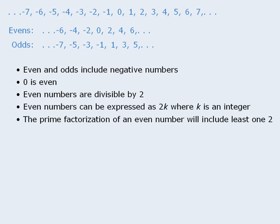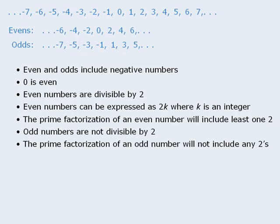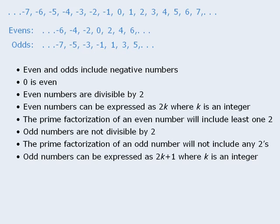Another way to say this is that the prime factorization of an even number will include at least one 2. Conversely, odd numbers are not divisible by 2, which means the prime factorization of an odd number will not include any 2s. And finally, odd numbers can be expressed as 2k plus 1, where k is an integer.